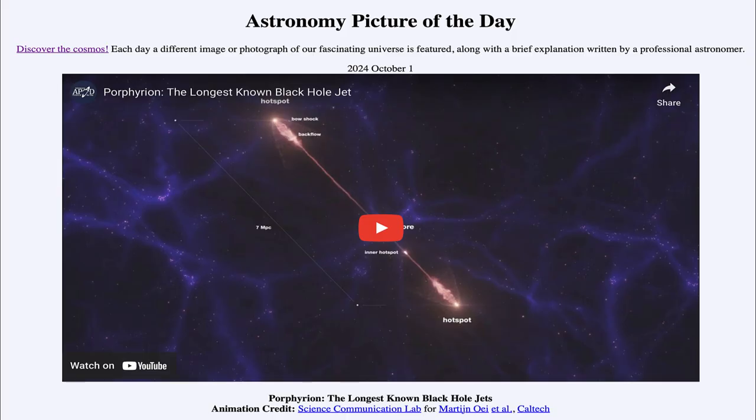Greetings and welcome to the Astronomy Picture of the Day podcast. Today's picture for October 1st of 2024 is titled Porphyrion, the longest known black hole jet.